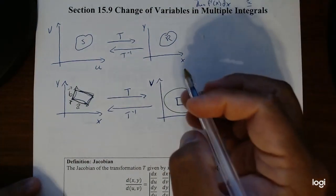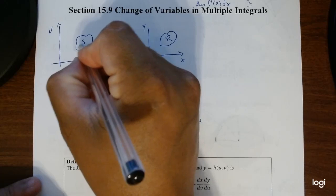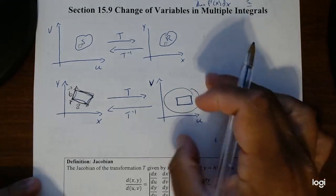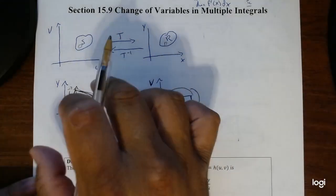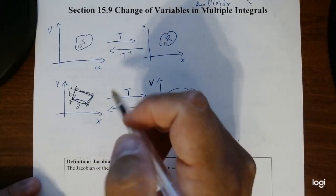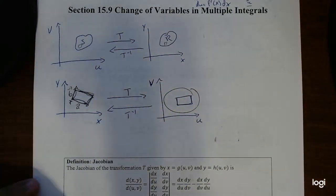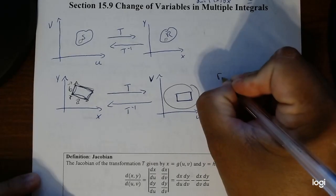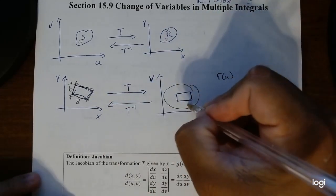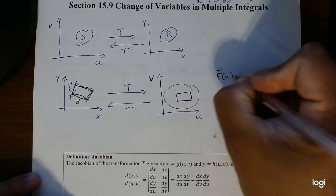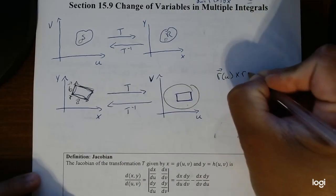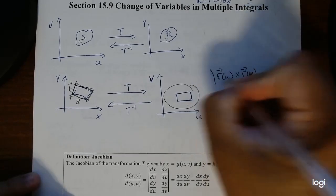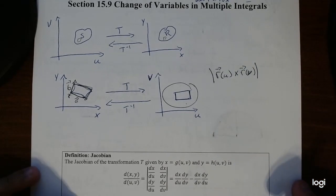The cross product gives us the area — specifically, the area of a parallelogram is the magnitude of the cross product. So we bring up all the individual rectangles in the UV area into the surface and go backwards using the cross product of each one. Since we want area, we find the magnitude of the cross product in terms of u and v.